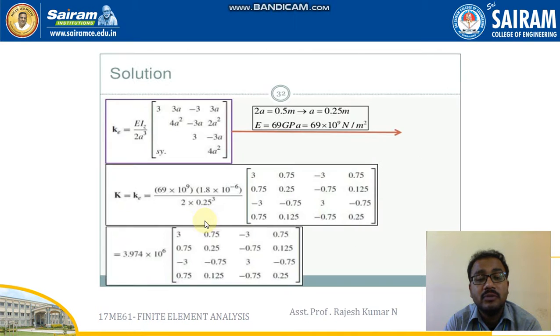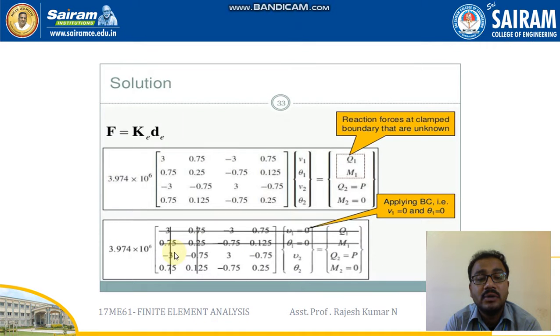First step we'll be finding out the moment of inertia value for the rectangular cross section. It is 1 by 12 bh cube. We will be substituting and finding out. This is stiffness matrix equation. Given L equal to 0.5 meter where the formula demands L by 2, which is 0.25 meter, I'll be substituting in this and we'll be finding out this k in stiffness matrix.